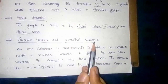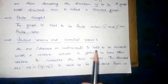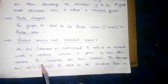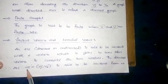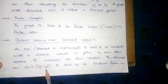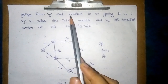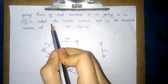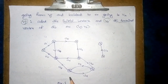Initial vertex and terminal vertex. An arc, directed or undirected, is said to be incident with a vertex which it joins to some other vertex — it connects the two vertices. The directed arc Ui = (Vj, Vk) is said to be incident from (going from) Vj and incident to (going to) Vk, where Vj is called the initial vertex and Vk the terminal vertex of the arc (Vj, Vk).